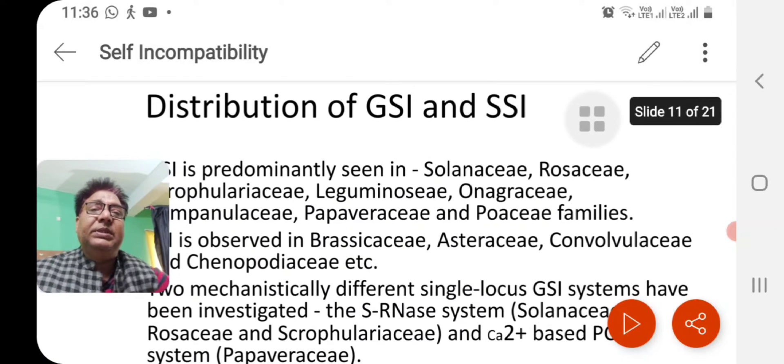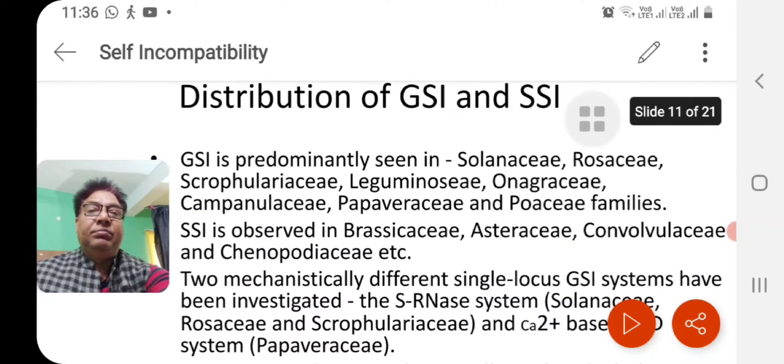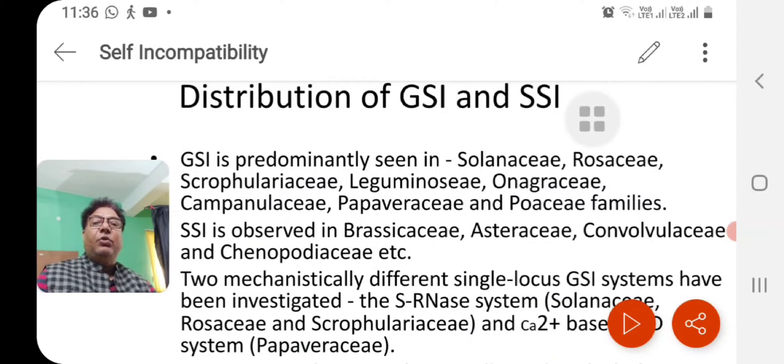But before going into that, let's talk about the distribution of GSI and SSI. Where do we find GSI and in which families? GSI is predominantly seen in Solanaceae, Rosaceae, Scrophulariaceae, Leguminosae, Onagraceae, Campanulaceae, Papaveraceae and Poaceae families.